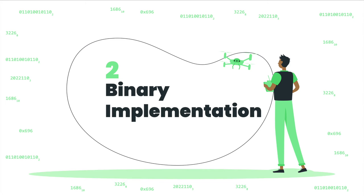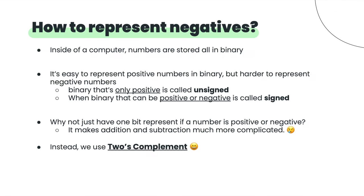Now let's talk about how binary is implemented in computers, especially around negative numbers. Inside a computer, it's really easy to represent positive numbers using positional notation. But when we're just storing bits, how do we know whether a number is positive or negative? When a binary number can only be positive, we call it unsigned; when it can be positive or negative, we call it signed — which comes from the idea of a positive or negative sign in front of a number.